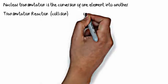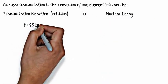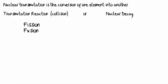There are a couple ways that this can happen, via transmutation reaction or nuclear decay. For transmutation reaction, there are two forms: fission and fusion.